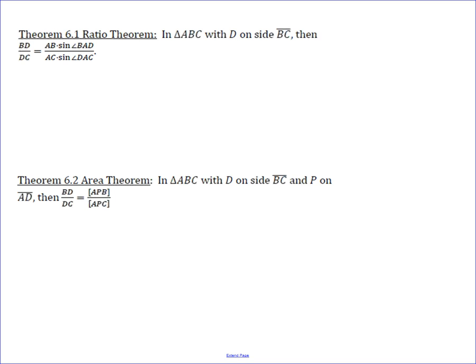This is a quick look at two nice theorems. One we refer to as the ratio theorem. And what the ratio theorem does is it says that if you've got a triangle ABC and then a point